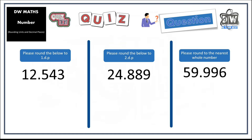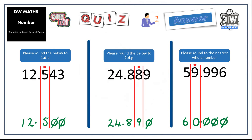It's time for the quiz. Only do it if you feel confident — if not, go back and watch from the start. The first question rounds to one decimal place, the second to two decimal places, and the third to the nearest whole number. Spot why that last question is interesting — it's there to test you. Pause the video and give it a go. For the answers: the first stayed the same, the second went up, and the third went up — giving an answer of 60. Hopefully that little curveball didn't throw you too much.